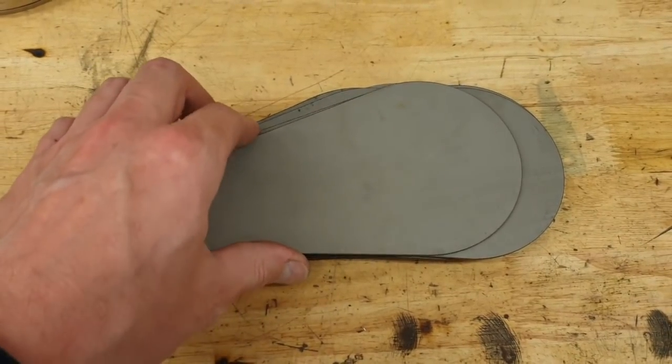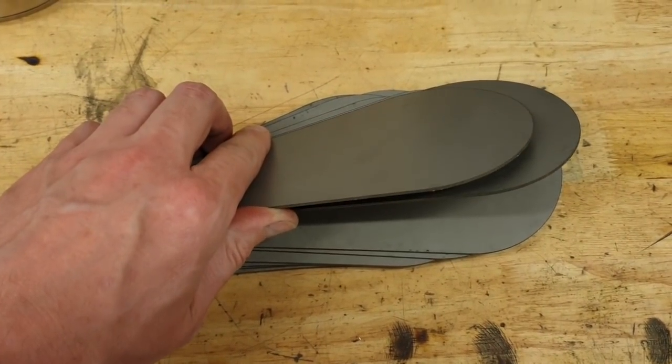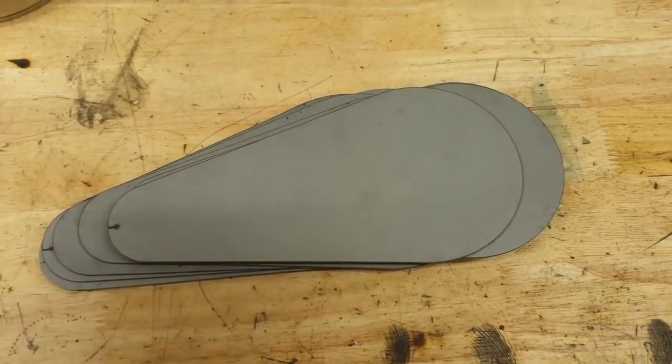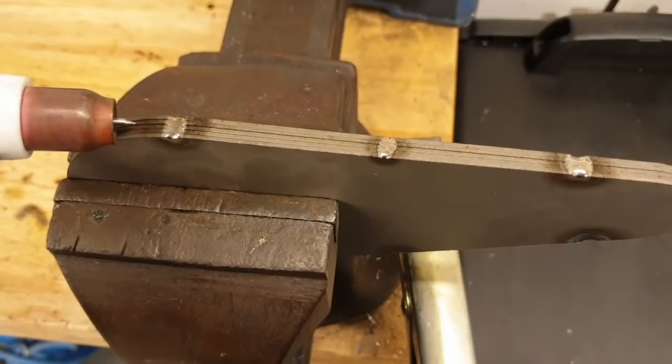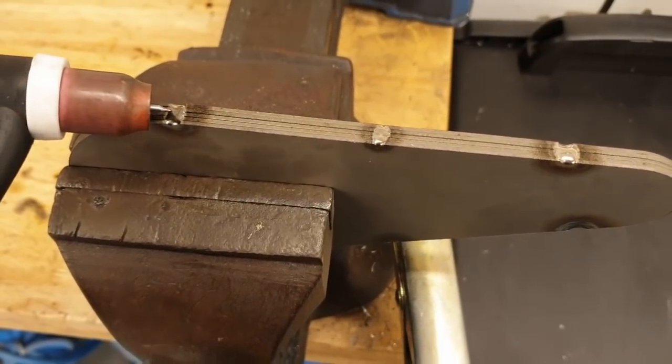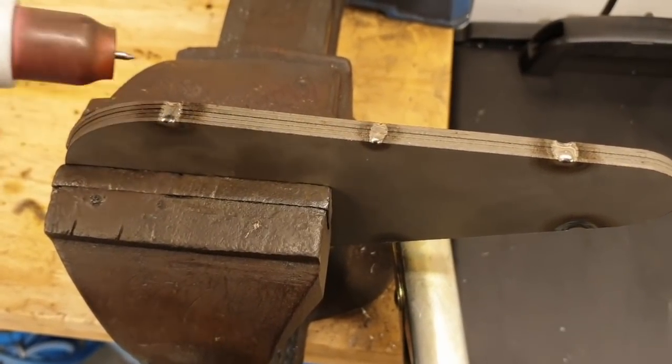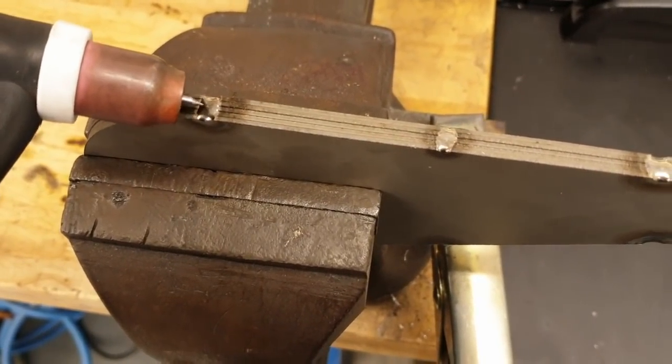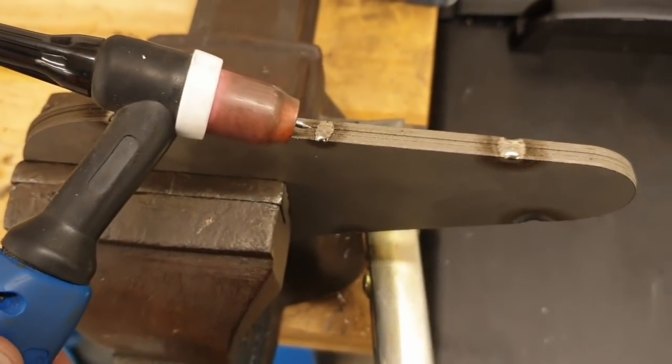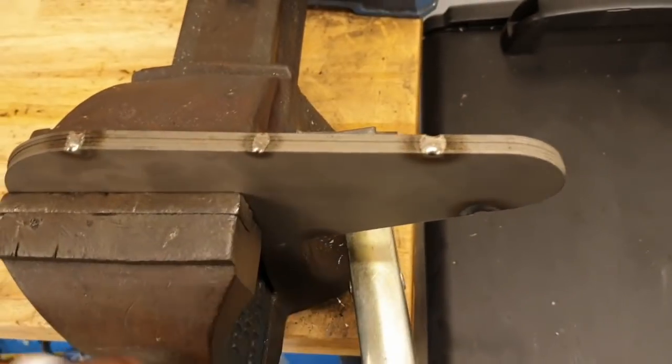But first, I'm going to take a few of these and weld them together. We finished welding five of these plates together. Actually never welded titanium before, but with TIG you can weld just about anything. So it turned out really nice.